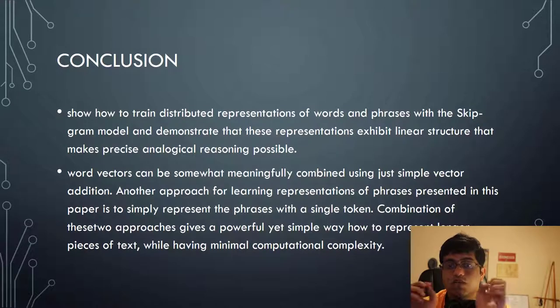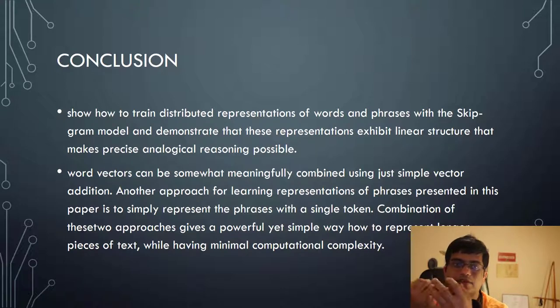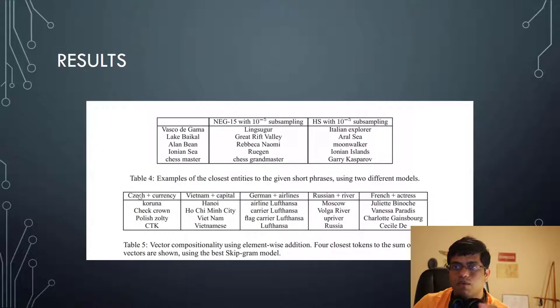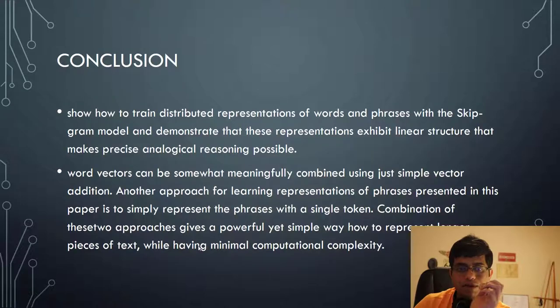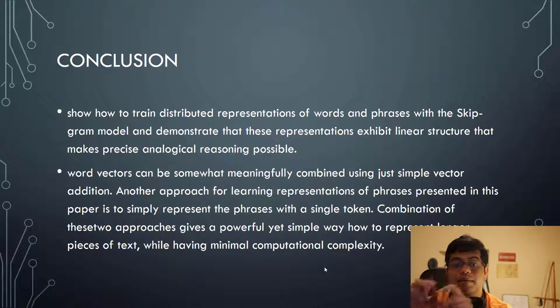So reaching to the end of this summary, the conclusion that we can draw is this paper actually shows us how to train distributed representations of words and phrases with skip gram model and demonstrate these representations exhibit linear structure so that we can do precise analogical reasoning. Then word vectors can be somewhat meaningfully combined using simple vector addition which we saw in last table where we combined word vectors and then found close entities and were yet able to find out very powerful analogical reasoning. Also we saw that we can combine two words to form a phrase and then use them to actually form a phrase based model. Combination of the above two approaches actually results in a very powerful yet a simple way to represent longer pieces of text while still maintaining the minimal computational complexity.